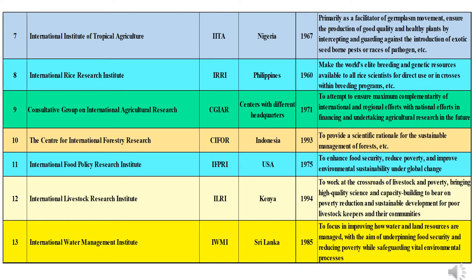Eleventh is IFPRI — International Food Policy Research Institute — headquartered in USA, formed in 1975. Its aim is to improve understanding of national agricultural and food policies, promote adoption of innovations in agricultural technology, and enhance food security, reduce poverty, and improve environmental sustainability. Twelfth is ILRI — International Livestock Research Institute — headquartered at Kenya, established in 1994. It focuses its research on building sustainable livestock pathways out of poverty in low-income countries.